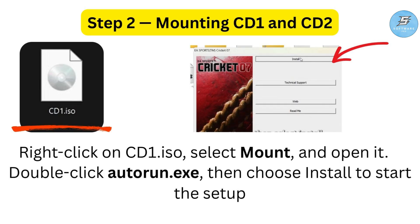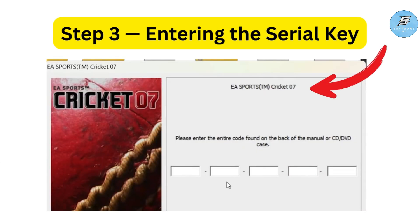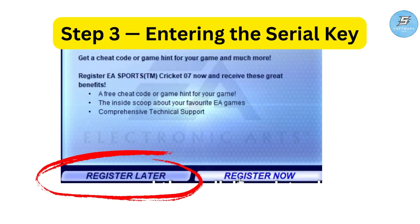Now let's move to step three: enter the serial key. If you legally purchased the game, you will find it on the box or in your email. Enter your genuine serial key and continue, then select the folder where you want to install the game.